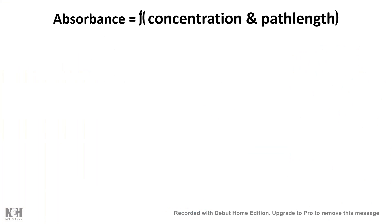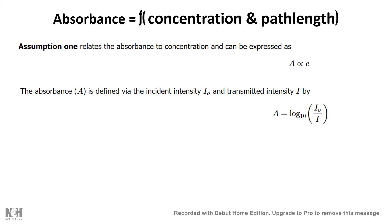Now clearly you can understand from this law it tells us that absorbance is a function of concentration and the path length. Now there are two assumptions. First assumption tells us that absorbance is proportional to the concentration and the second assumption tells us that absorbance is proportional to the path length. In a moment we would learn physically how it is possible and why it is so.